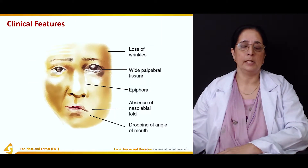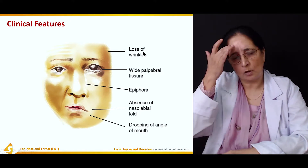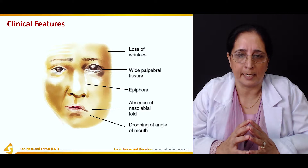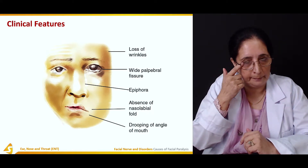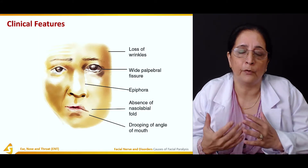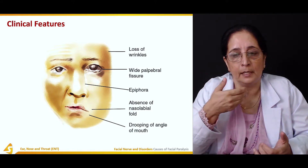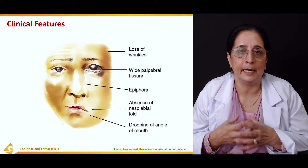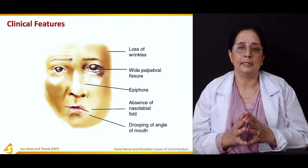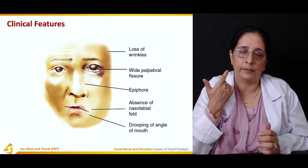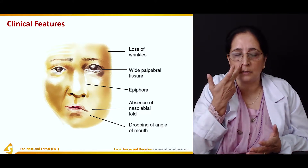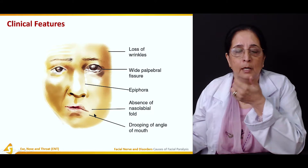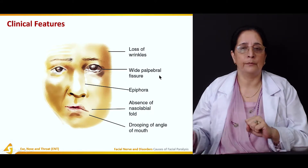The clinical features of Bell's palsy include loss of wrinkling — the affected person cannot wrinkle the forehead — wide palpebral fissure, epiphora (increased tearing from the eye), absence of the nasolabial fold, and drooping of the angle of the mouth. These are the common presentations: drooping of the face, epiphora, loss of the nasolabial fold, wide palpebral fissure, and loss of forehead wrinkles.